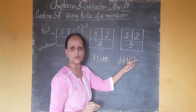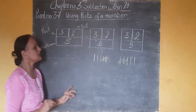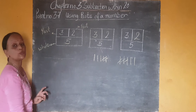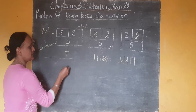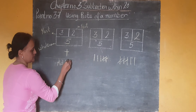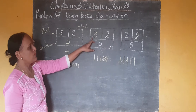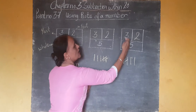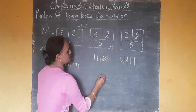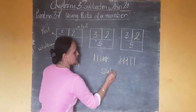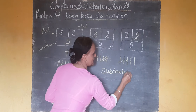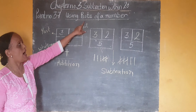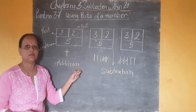So 3 plus 2 equals 5. When both parts are given and the whole is not given, you have to do addition. When one part is empty — whether the left side part or the right side part is not given — you have to do subtraction. In this way you find the parts of the number. Thank you.